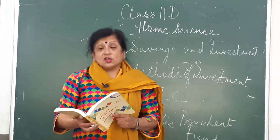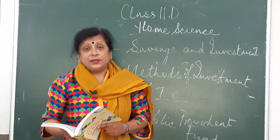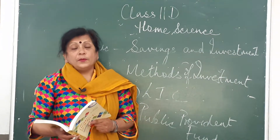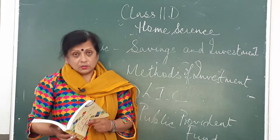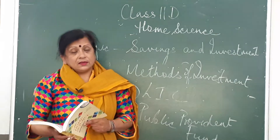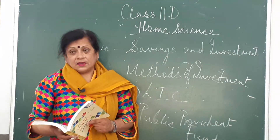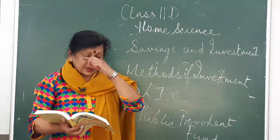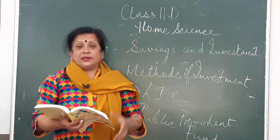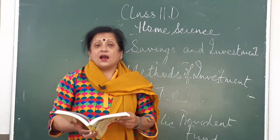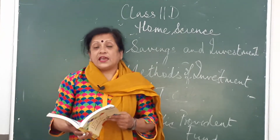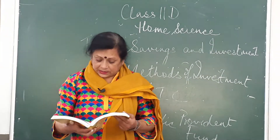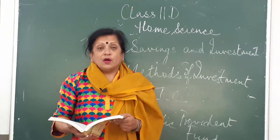In the case of self-employed people who don't have a provident fund, they can open a public provident fund account either with the bank or with the post office — the earlier, the better. In this account, they can deposit a certain amount of money, which they will get back after the age of 58, along with the rate of interest. So this is another form of investment.